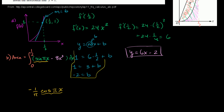The antiderivative of negative 8x to the third power is negative 2x to the fourth power. I incremented the exponent from 3 to 4 and divided 8 by 4. You can take the derivative to verify this gives negative 8x to the third.